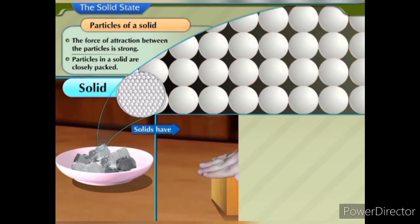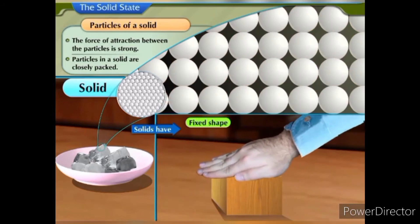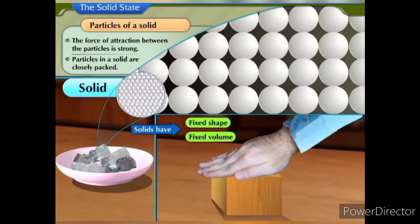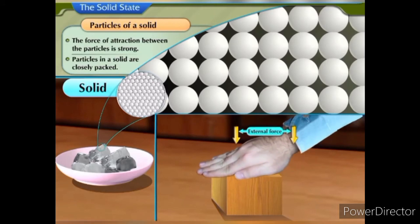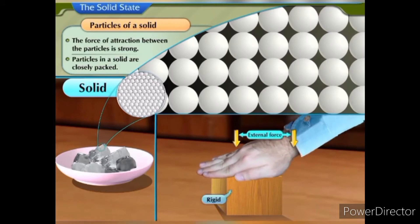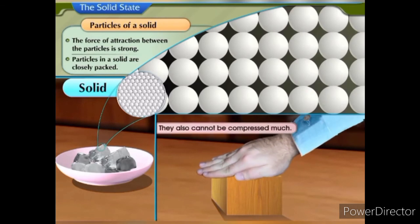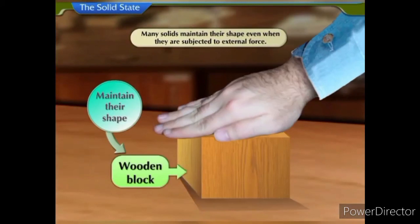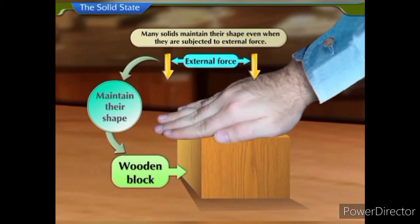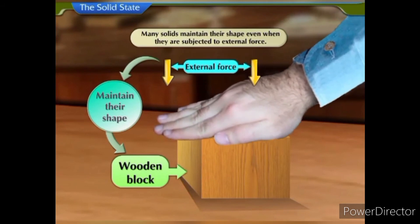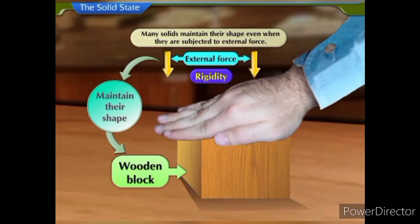Therefore, solids have a fixed shape and a fixed volume. They maintain their shape even when subjected to external force — that is, they are rigid. They also cannot be compressed much. Many solids maintain their shape even when subjected to external force. This property of solids is called rigidity.